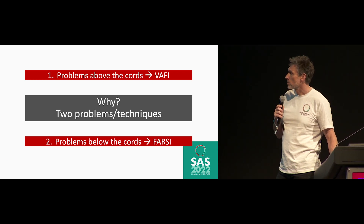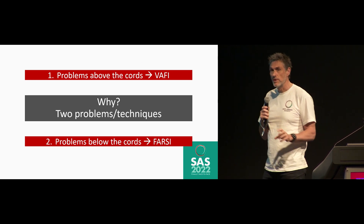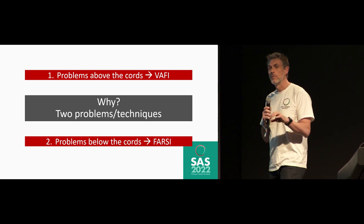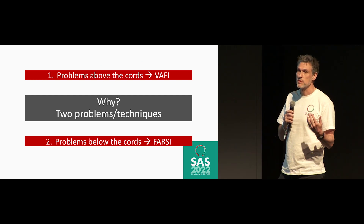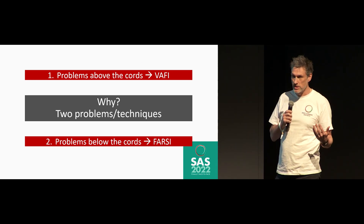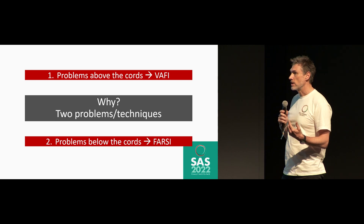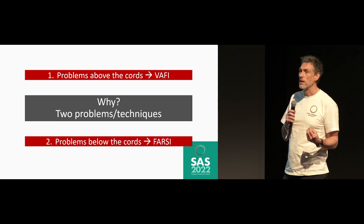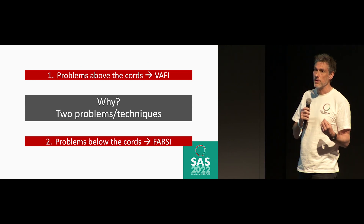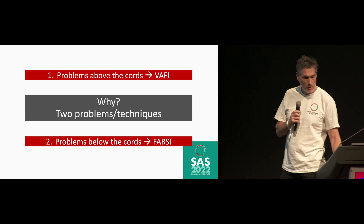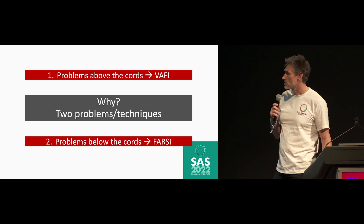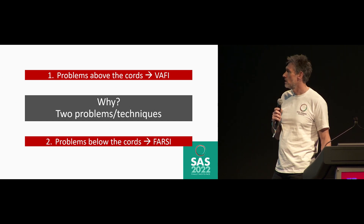The second problem is when we're anticipating a problem below the vocal cords — namely some sort of breach to the trachea, which we are particularly worried about making worse, causing tracheal separation or a false passage.